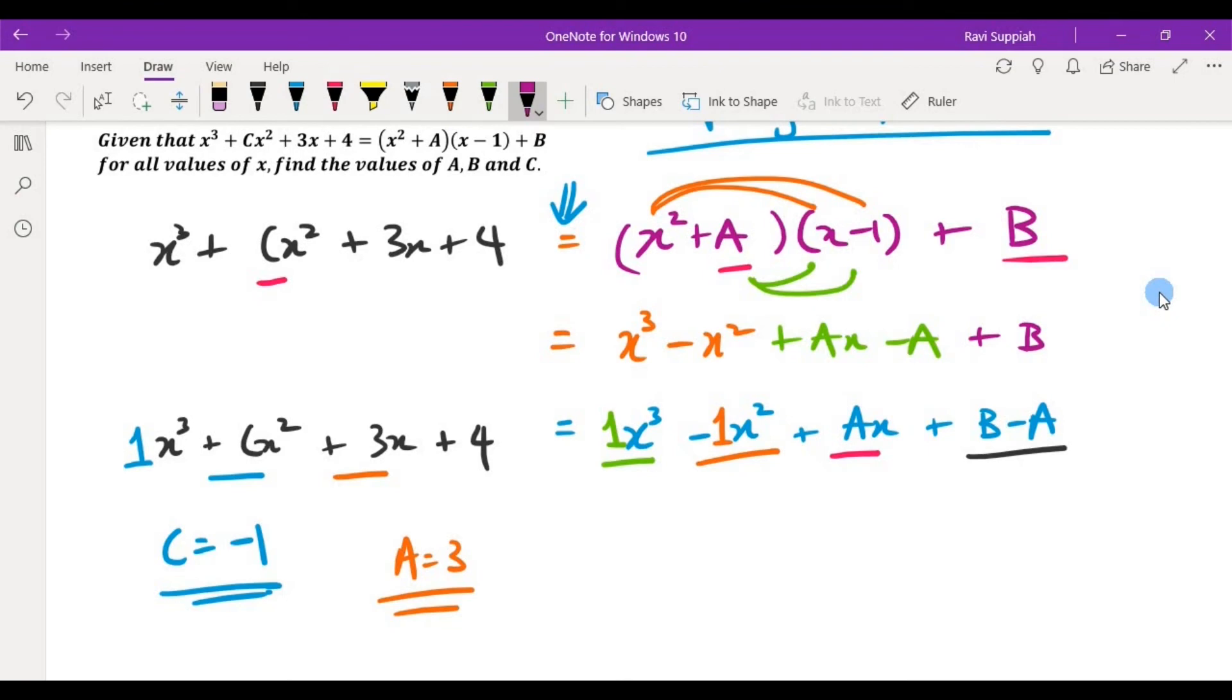Finally for the constant, you have b minus a and here the constant is 4. So b minus a is equals to 4. So b is equals to 4 plus a, which is equals to 4 plus 3, and that implies that b is equals to 7.